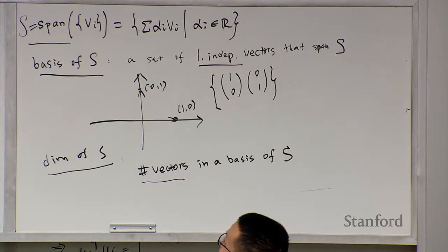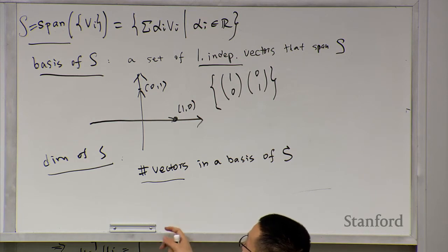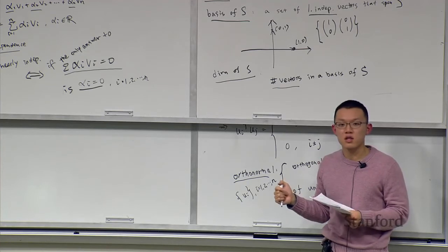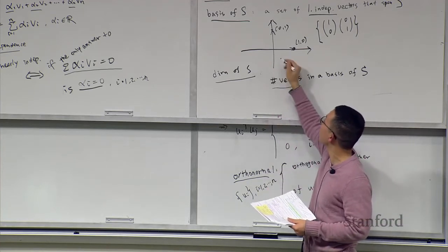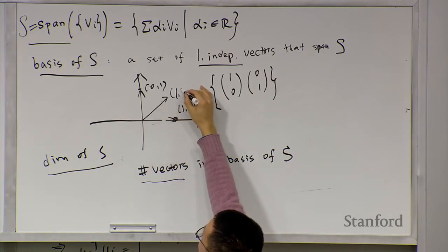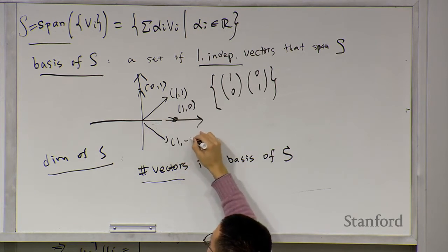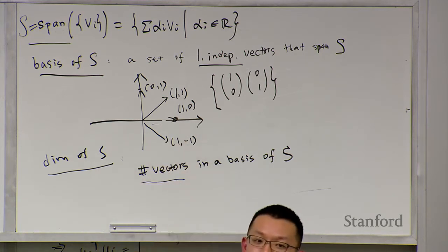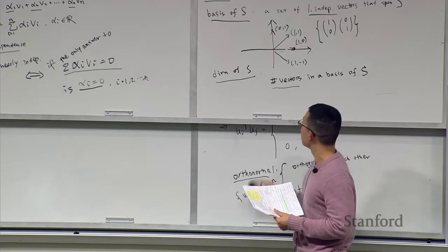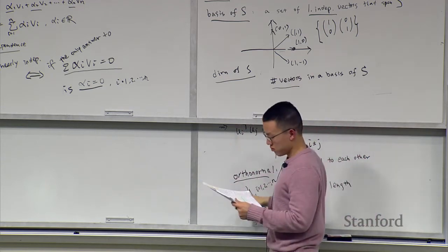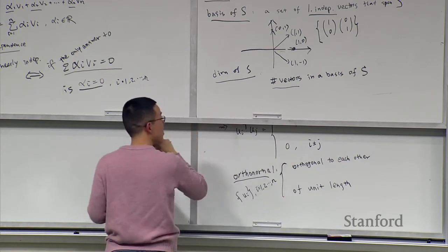The basis of a space is not necessarily unique. For 2D space, we could use [1,0] and [0,1], but also [1,1] and [1,-1] — both pairs are linearly independent and span the 2D plane. The number of vectors is still 2, so it is still a 2D space.